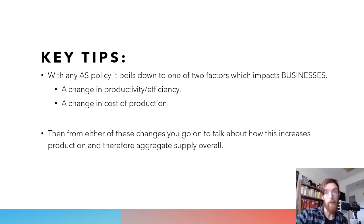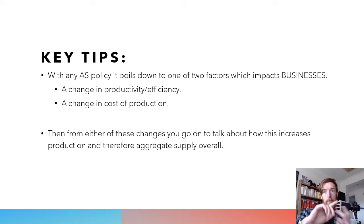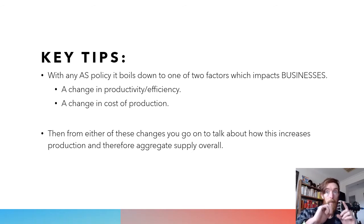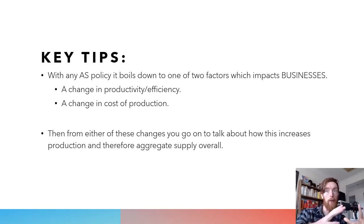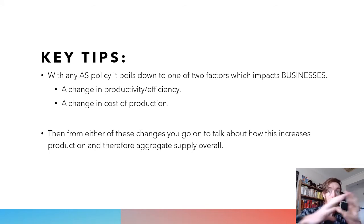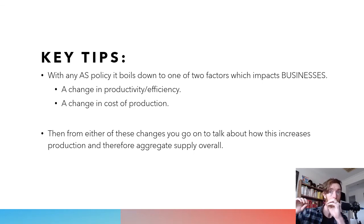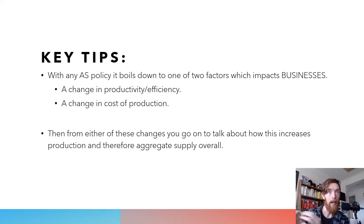Some key tips before we go into it: when you talk about aggregate supply, unlike aggregate demand where we talked about components like consumption, investment, government spending, exports and imports — with aggregate supply you're always talking about one of two things: either a change in the productivity or efficiency of a business, or a change in cost of production because of that policy. From that policy you go to how it affects one of those two things, and then to how it affects productive capacity and aggregate supply. Almost all of your answers follow the exact same structure.